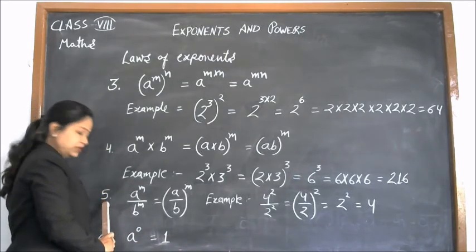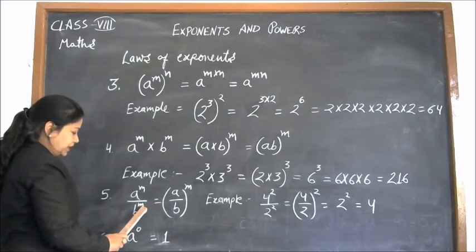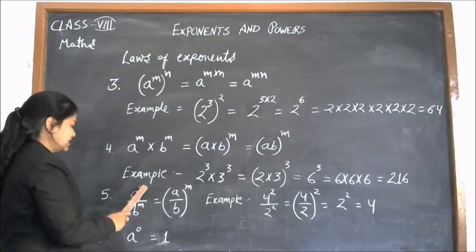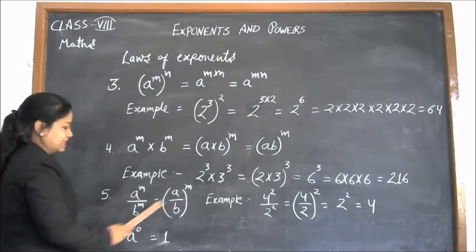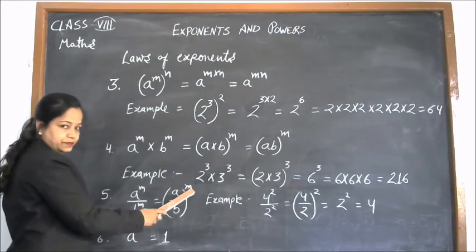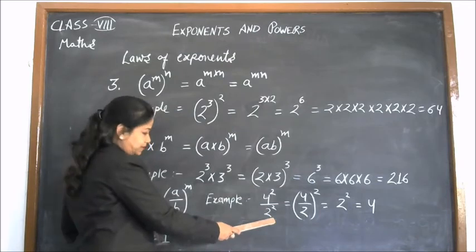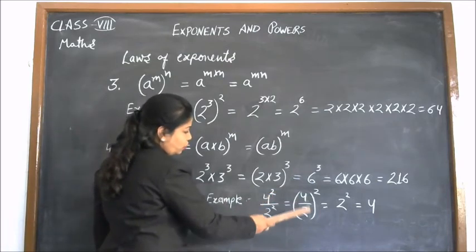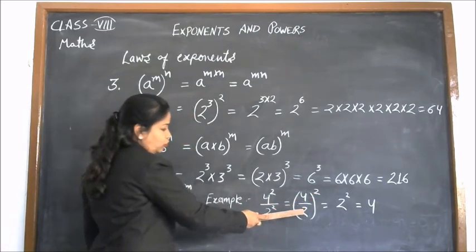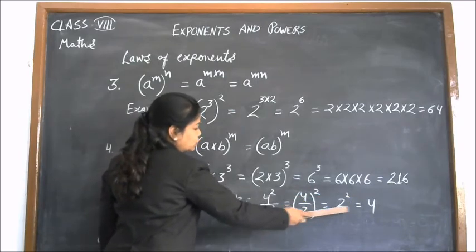Our fifth law is a to the power m divided by b to the power m. We have two different bases but the same power. We can write it as a divided by b, whole to the power m. For example, 4 squared divided by 2 squared. We can write it as 4 upon 2, whole squared. 4 divided by 2 is 2, so it becomes 2 to the power 2, and 2 squared is 4.